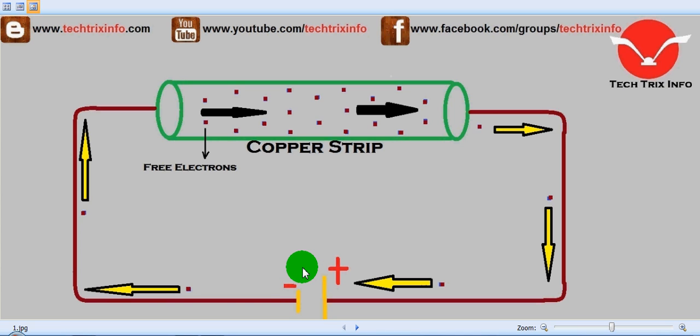An electric pressure or voltage is applied over here. So what happens is that as these electrons are free and negatively charged, they get attracted towards the positive terminal.